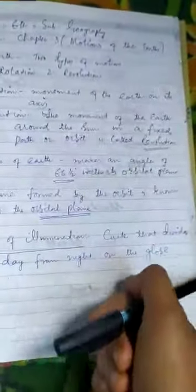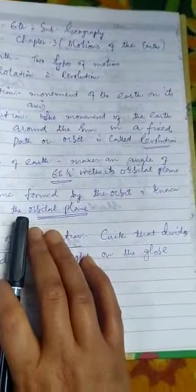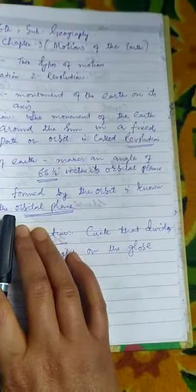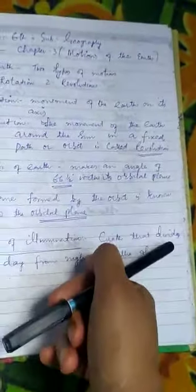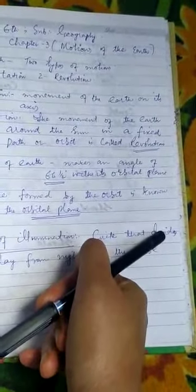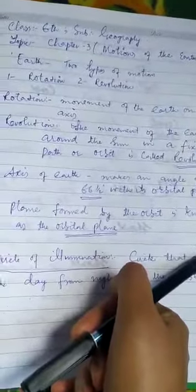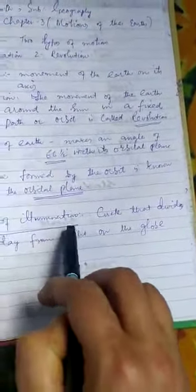The part away from the sun is the night. The circle that divides the day from the night on the globe is called the circle of illumination.